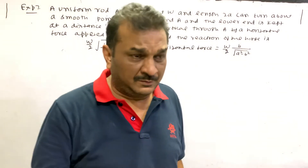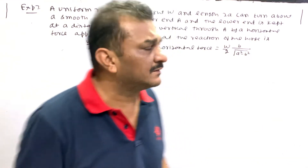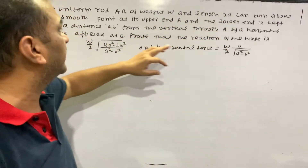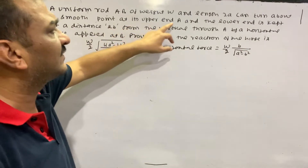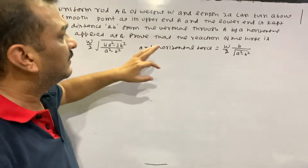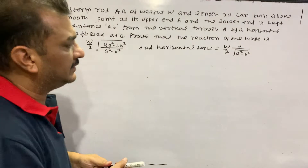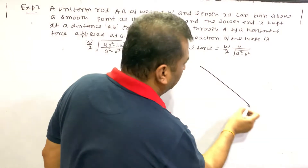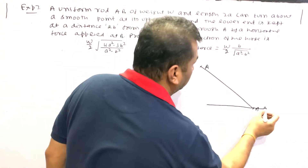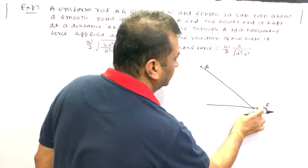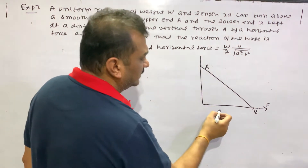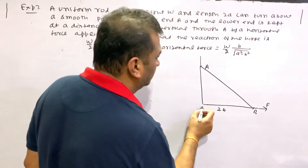Hello students. Equilibrium of a rigid body, next example — Example number seven. A uniform rod AB of weight W and length 2a can turn about a smooth point at its upper end A. The lower end B is kept at a distance 2b from the vertical through A by a horizontal force applied at B.